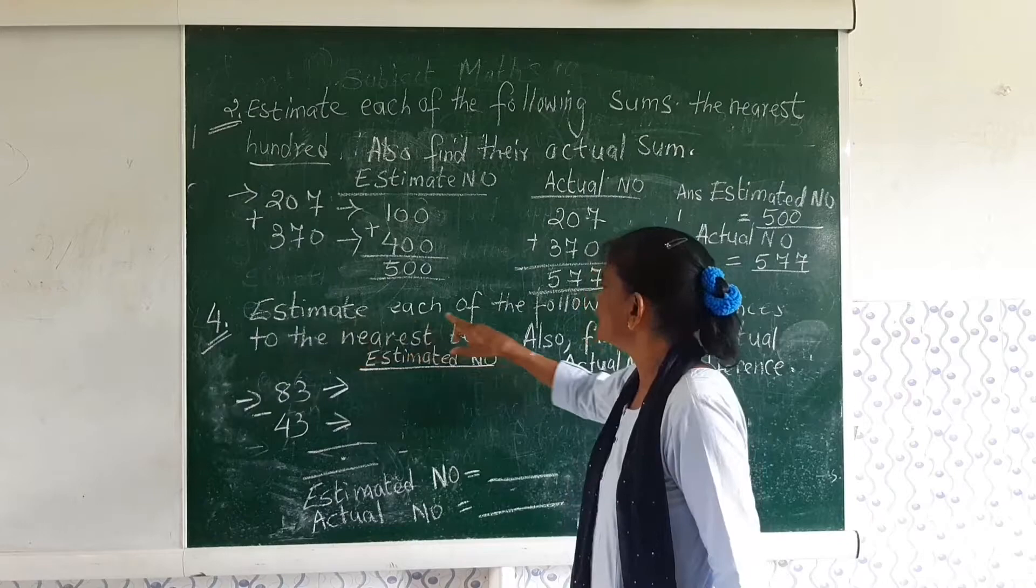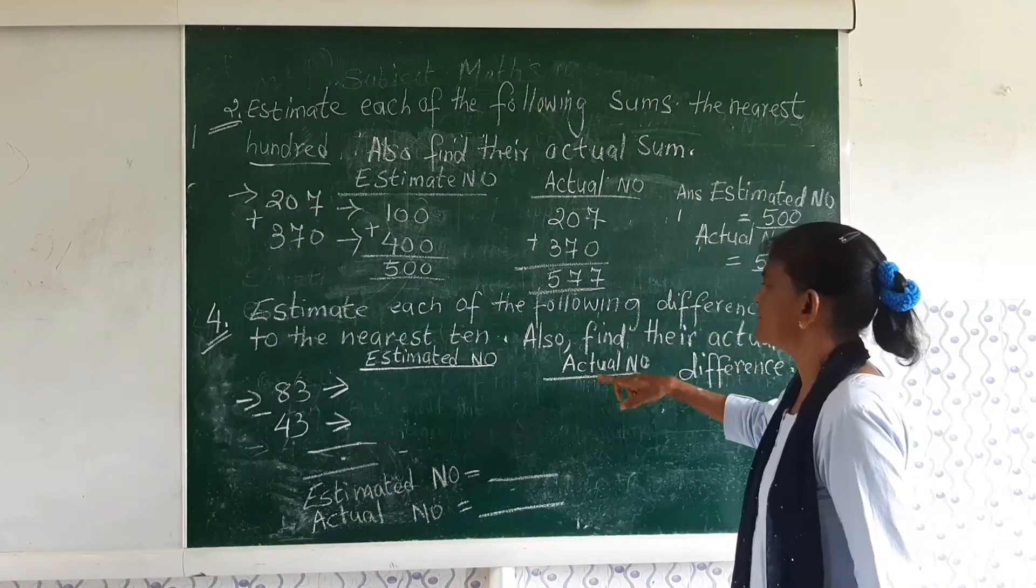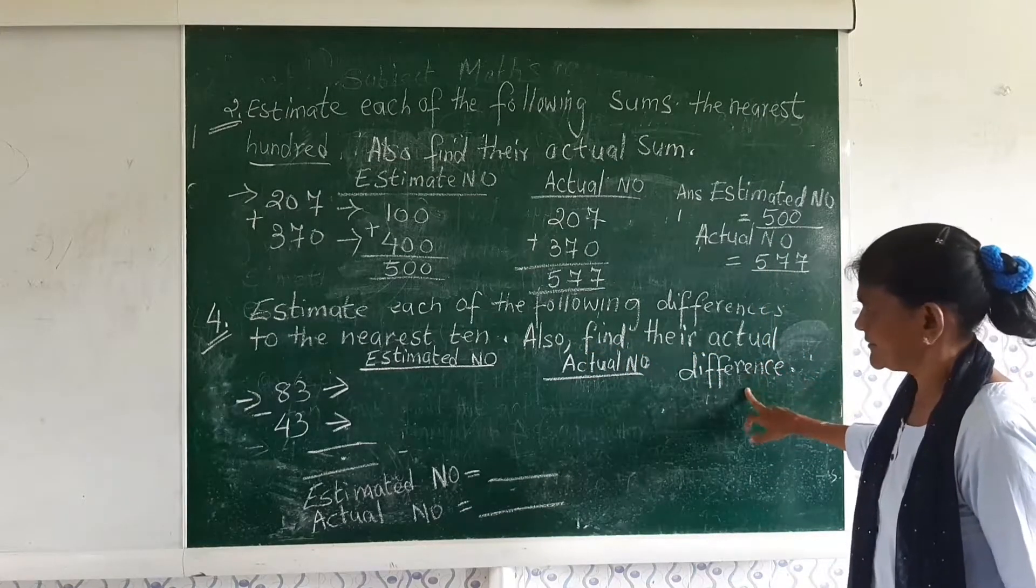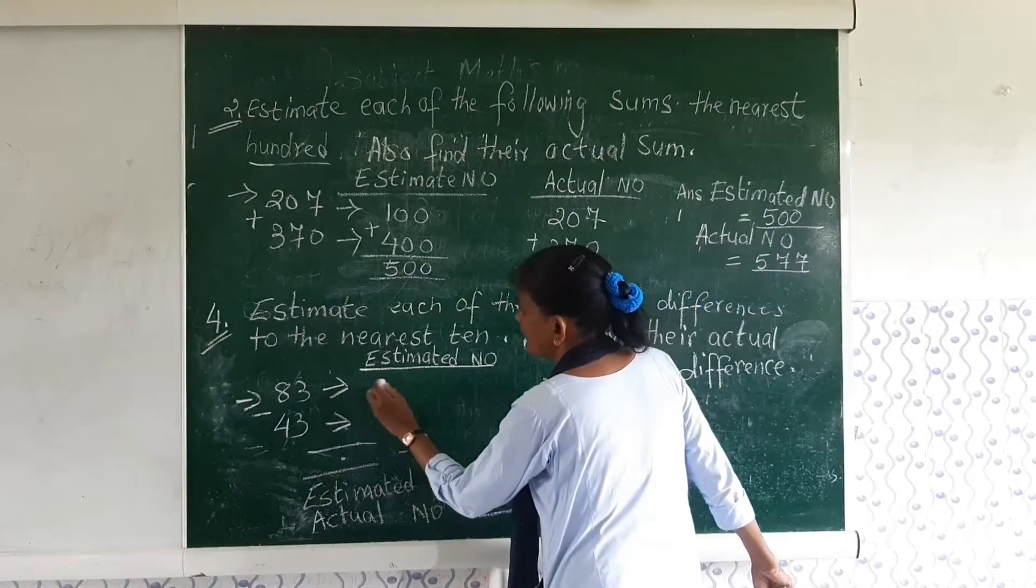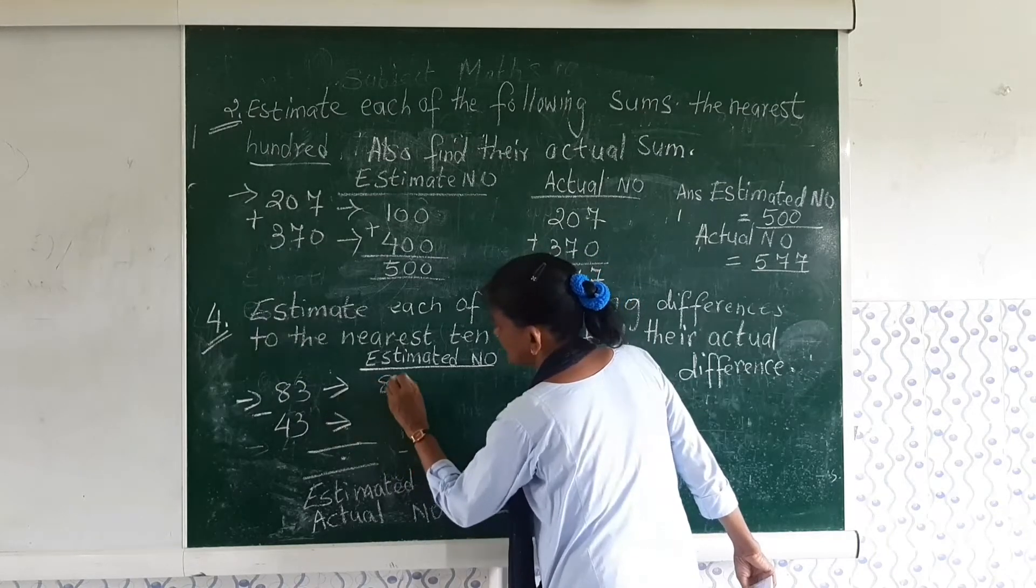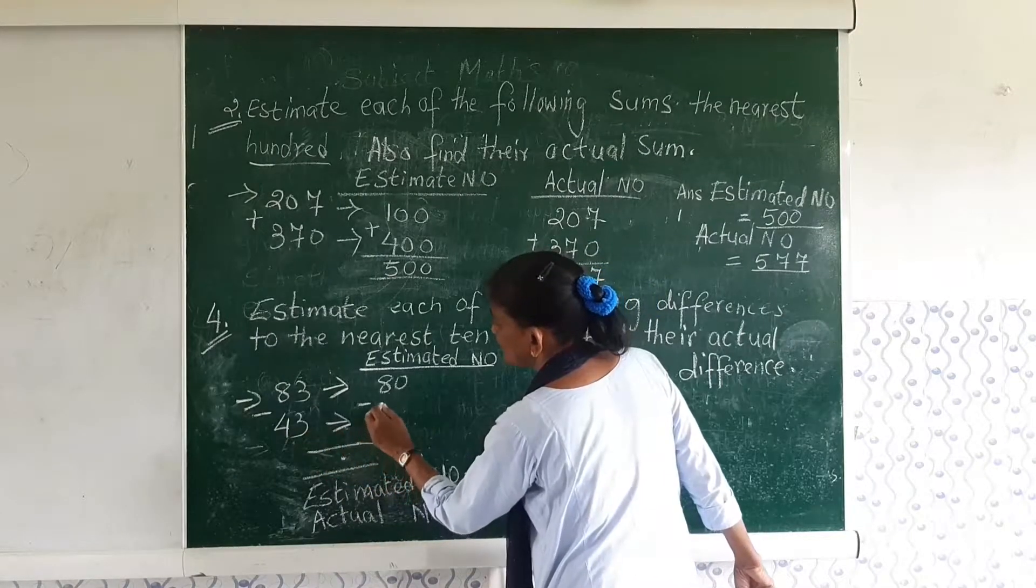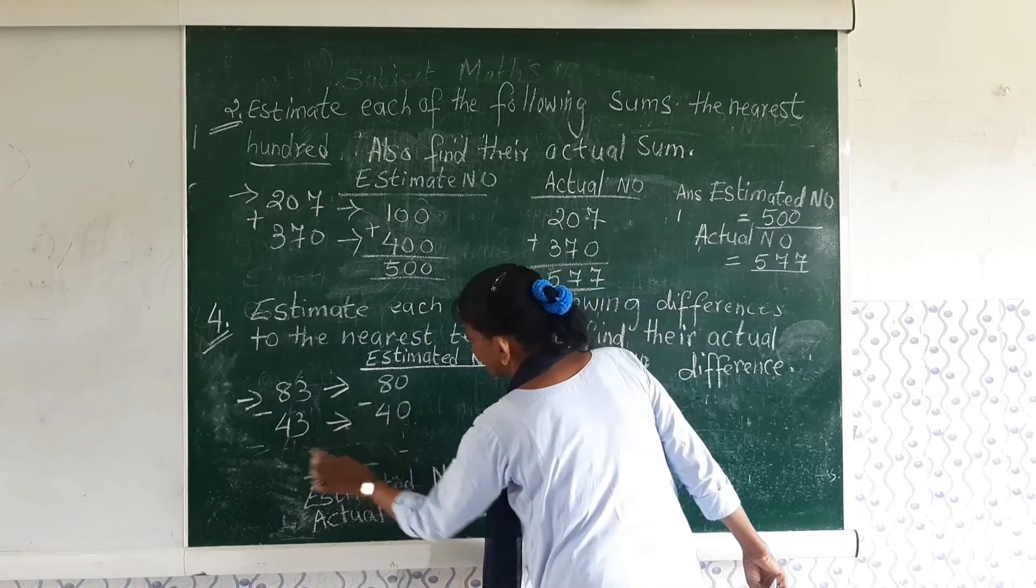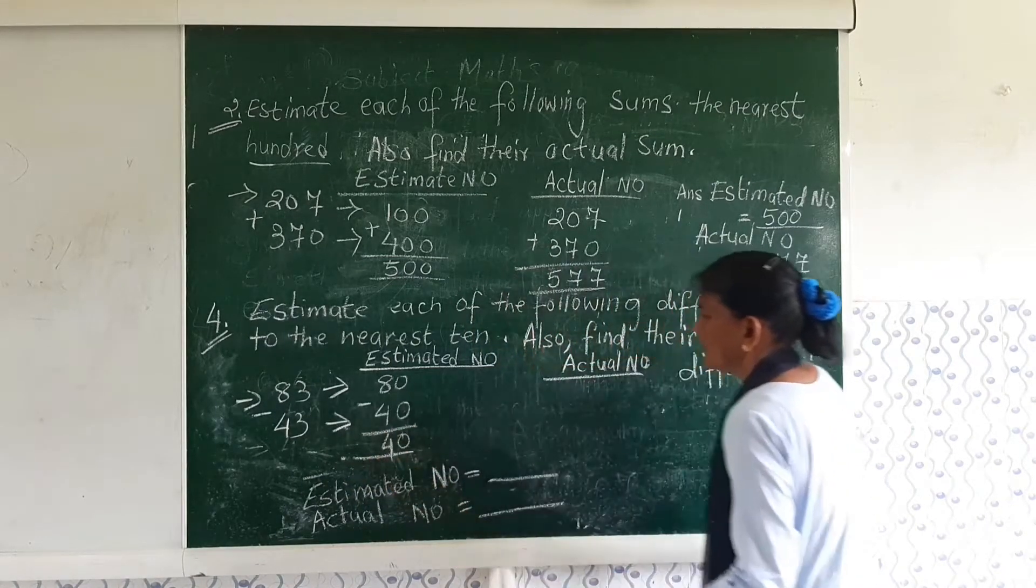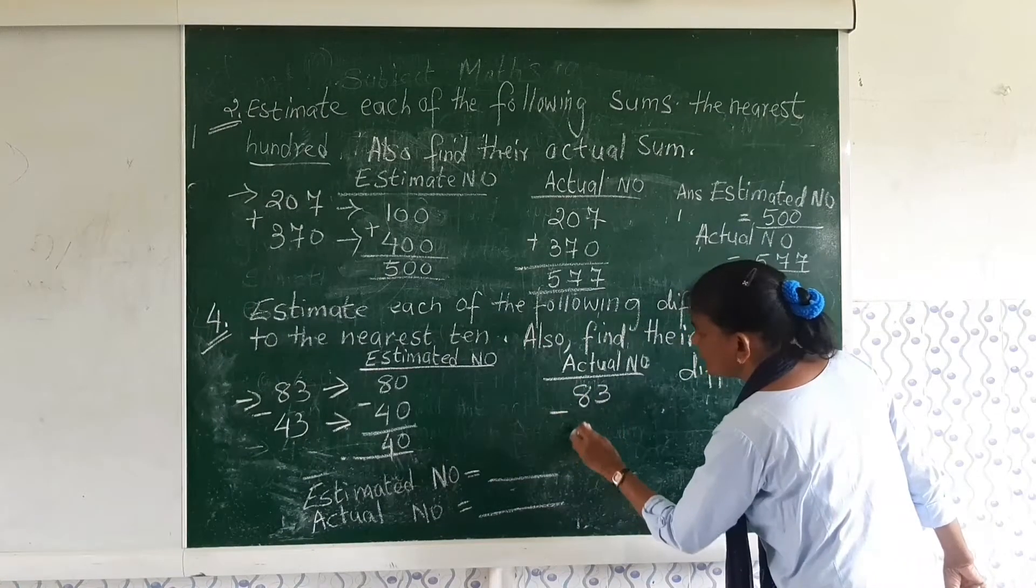Estimate each of the following differences to the nearest 10. Also find the actual difference. The estimate number is 83 minus 43. We have to round it, so we get 80 minus 40.